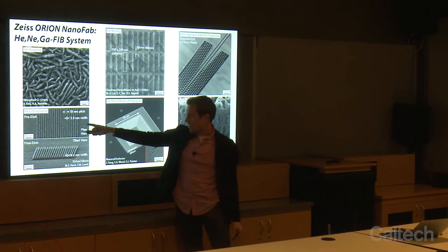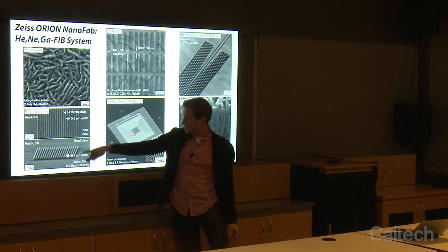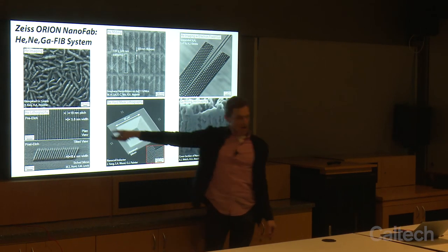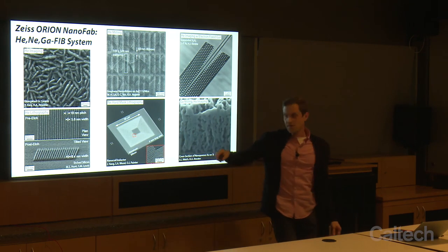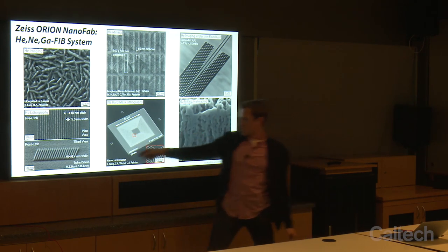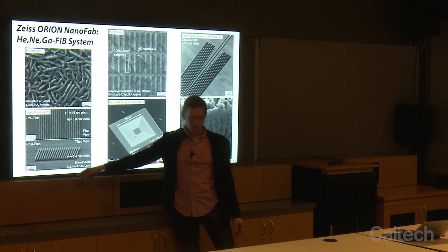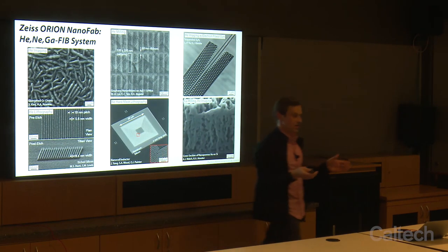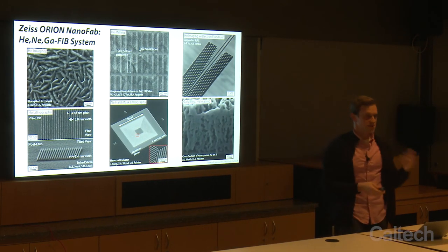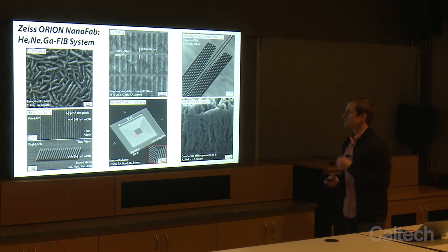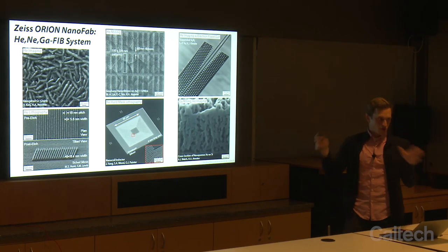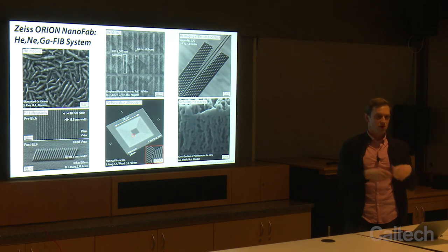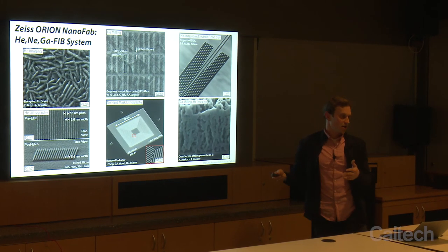We can do helium lithography. We published this just last year where we were able to write lines that are about five nanometers wide. We were then able to transfer the pattern via etch and maintain about a six nanometer silicon fin — done with both silicon and with tungsten. That's now the new record for smallest features made in silicon with conventional lithography.